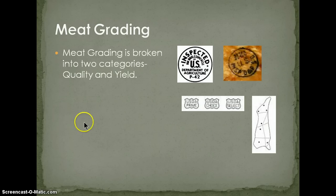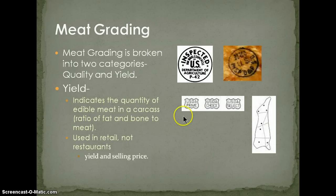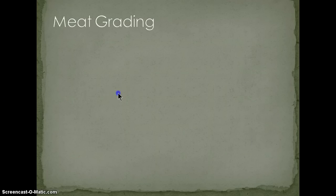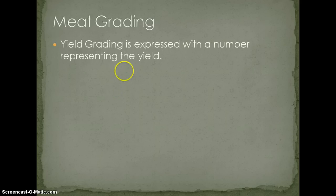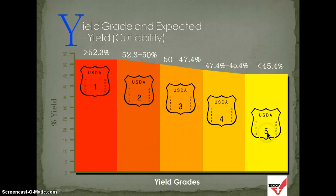Meat grading is broken down into two categories: quality and yield. In restaurants we're primarily concerned with quality. Yield indicates the quantity of edible meat versus non-edible meat in a carcass — more relevant if you're a sausage maker processing whole carcasses. Yield grading is expressed as a number from one to five, where one is the best yield and five is the worst.